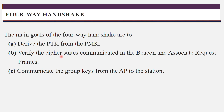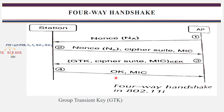The second goal is to verify the cipher suites communicated in the beacon and associate request frames — two frames received from the access point. That verification is also one of the goals of the four-way handshake. The third goal is communicating the group keys from the AP to the station. These are the three goals: derive the PTK, verify beacon and associate request frames, and communicate group keys from AP to workstation.